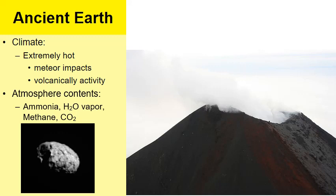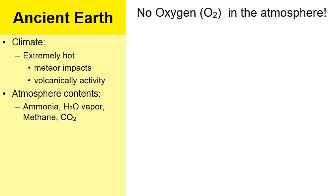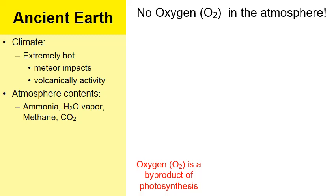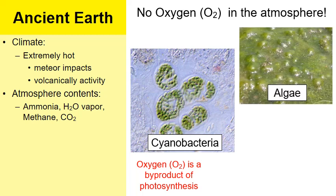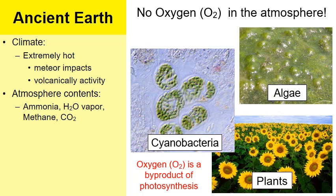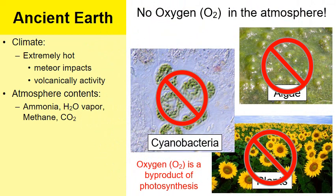A lot of the water came from volcanic gases — like the steam being released from volcanoes in this picture. One thing worth mentioning: as crucial as oxygen is to life, at this time there was no oxygen in the atmosphere. Oxygen is a byproduct of photosynthesis, performed by organisms like cyanobacteria, algae, and plants — but these organisms did not exist yet. So if there's no photosynthetic life, there's no oxygen in the atmosphere.